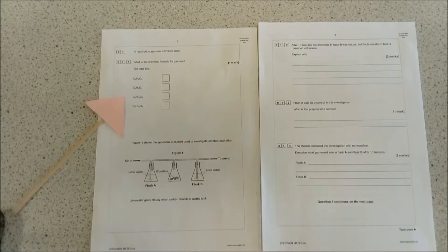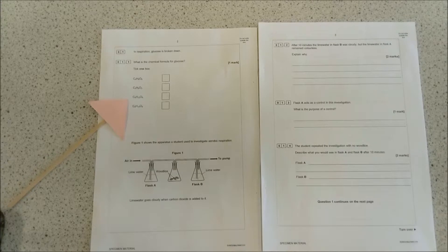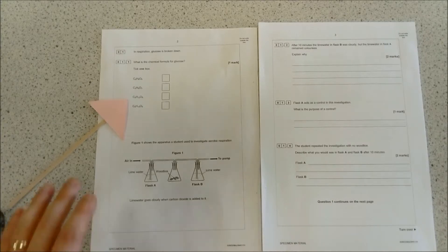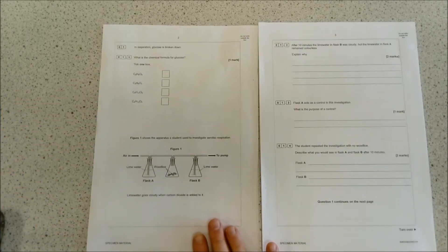You need to make sure that you know what that chemical formula is. Make sure you make a flash card on it within your revision and keep testing yourselves. It's one of those key formulas that will come up again and again on the biology paper.